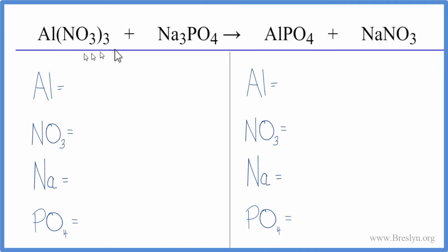In this equation, we have aluminum nitrate and sodium phosphate. So to balance this equation, we're going to use a little bit of a trick that'll make it a lot easier. So let's try this.